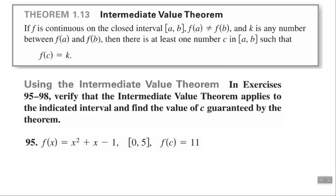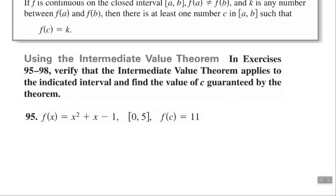The Intermediate Value Theorem states that if f is continuous on the closed interval [a, b], and f(a) ≠ f(b), and k is any number between f(a) and f(b), then there is at least one number c in the closed interval [a, b] such that f(c) = k. We want to verify that the IVT applies to a given interval and find the value of c guaranteed by the theorem.